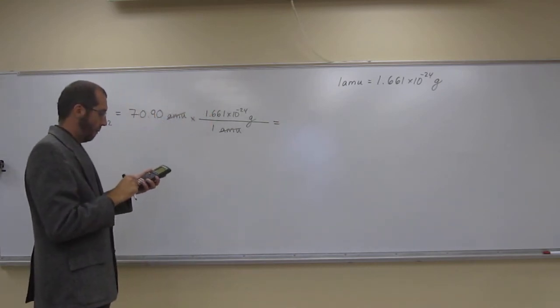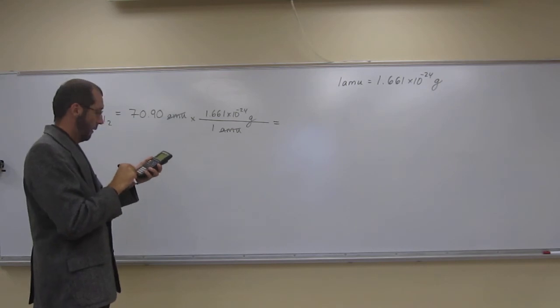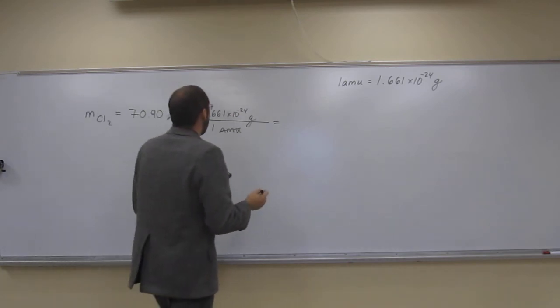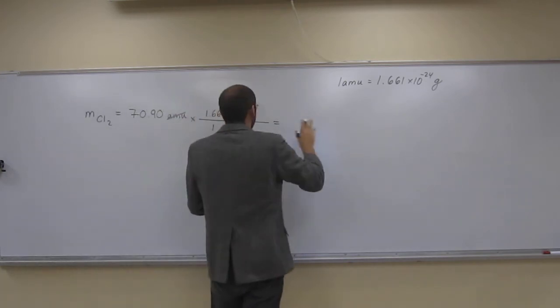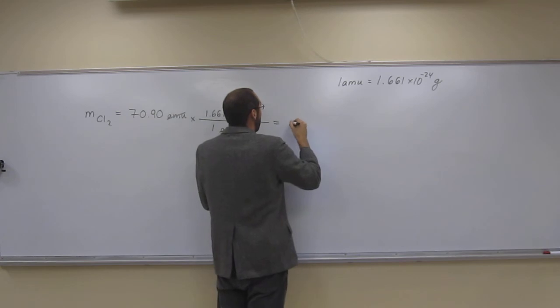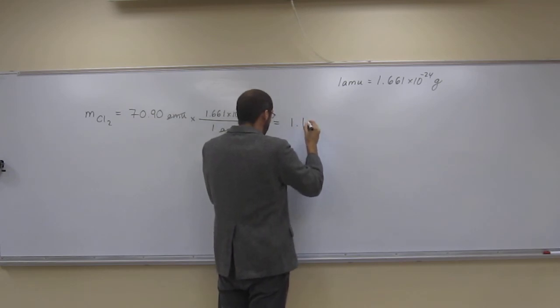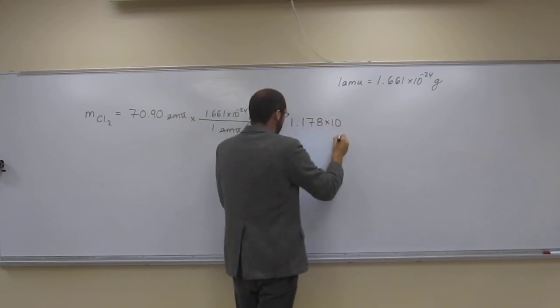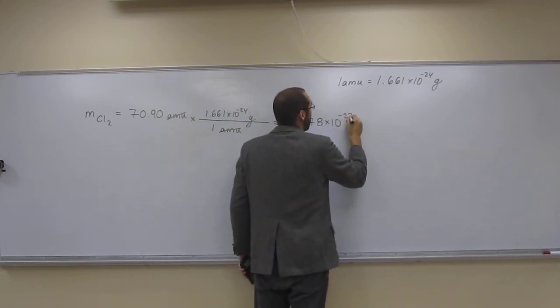So we just take 70.90 times 1.661 times 10 to the negative 24th, and we get, since I did 4 sig figs here, we'll do 4 sig figs here, 1.178 times 10 to the negative 22nd.